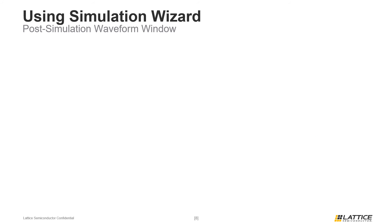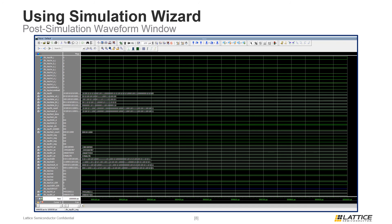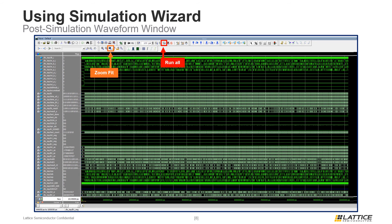If all three final Simulation Wizard checkboxes were enabled, ModelSim will launch, compile the files for the simulation, and then open an additional waveform window. One important thing to note is that by default, simulations will only simulate the first microsecond of a simulation session. To simulate the rest of the test bench, click the Run All button at the top of the window. The simulation will continue until it reaches the end of the test bench. To view the waveform for the entire simulation, click the Zoom Full icon, which will expand the waveform display timescale to show the entire simulation.